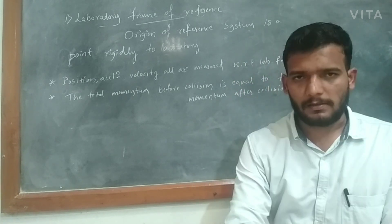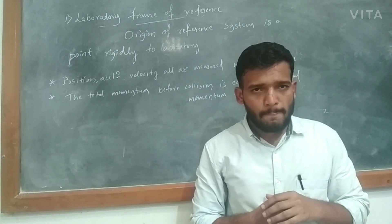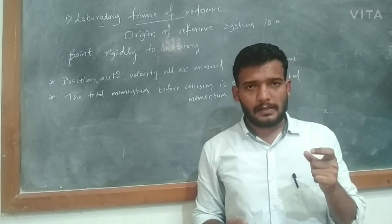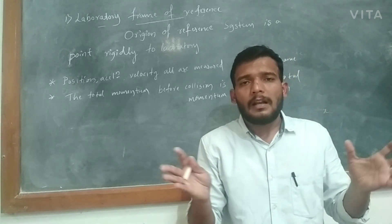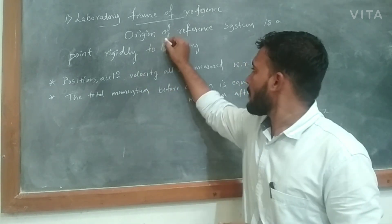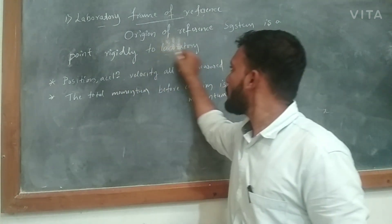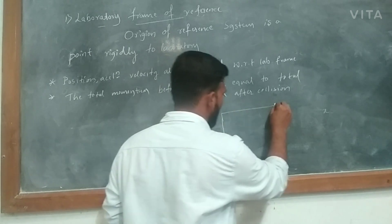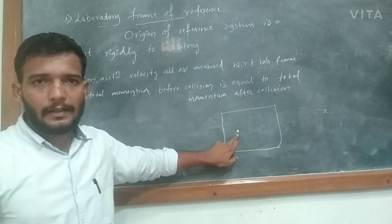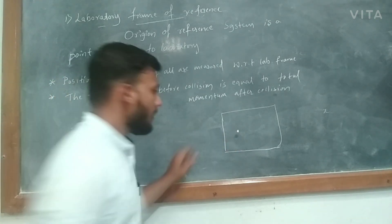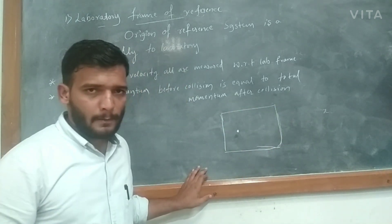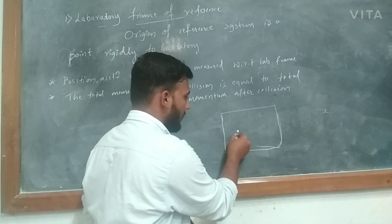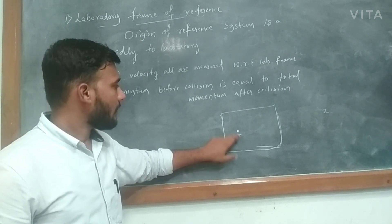What is meant by the laboratory frame of reference? If you are doing an experiment in the laboratory and you have to find out the exact position of microparticles, atoms, or subatomic particles, you have to consider the laboratory as a frame of reference. The definition: the origin of the reference system is a point rigidly fixed to the laboratory. You take a point rigidly in the lab and find out its position. In this frame, position, velocity, and acceleration are all measured with respect to the lab reference.